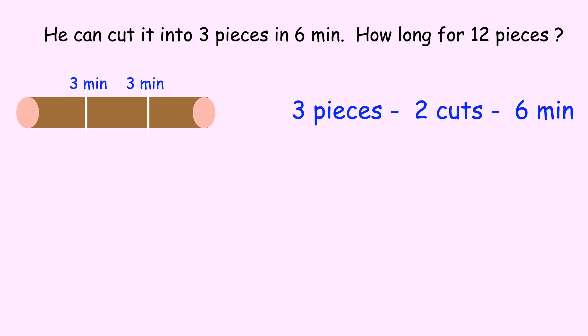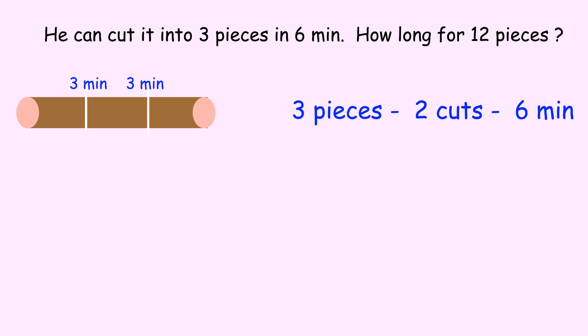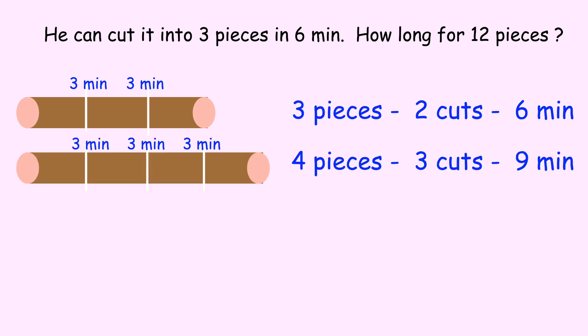So we can cut it into 3 pieces in 6 minutes. So 3 pieces means 2 cuts, and 3 minutes per cut — that's a total of 6 minutes, which is 3 times 2. Now let's suppose he cuts it into 4 pieces. That's 3 cuts. 3 minutes per cut is 9 minutes, which is 3 times 3.